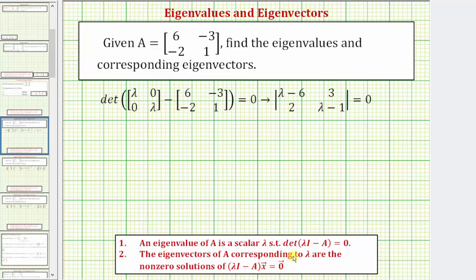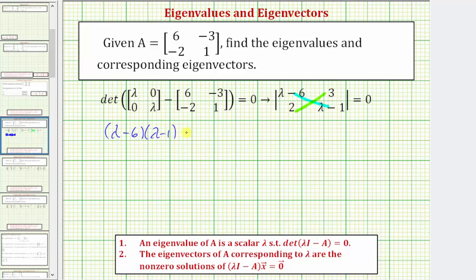Let's first find the eigenvalues. Here we have the determinant of lambda times the two-by-two identity matrix, which gives this matrix, minus the given matrix A, must equal zero. Performing the matrix subtraction, we get lambda minus six, zero minus negative three which is three, zero minus negative two which is two, and lambda minus one. The next step is to find the value of the determinant, which is this product minus this product, and it must equal zero.